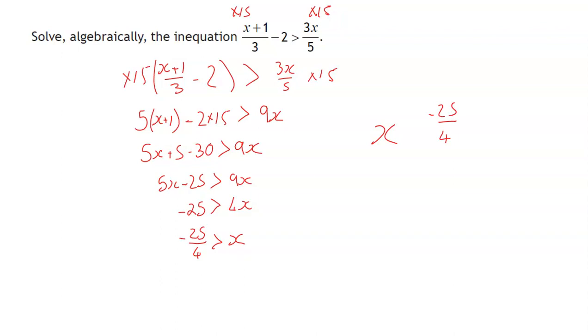However, this is the difference between an equation and an inequality. For an equation, I could just swap both sides directly over. But for an inequality, if I just swap both sides directly over, what I'm going to do is I'm going to go from negative 25 over 4 is bigger than x to x is bigger than negative 25 over 4. So I'm going to completely contradict myself.